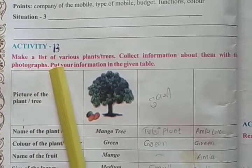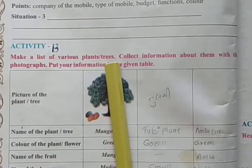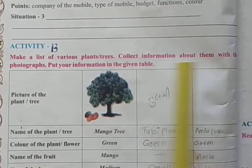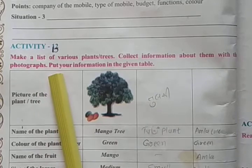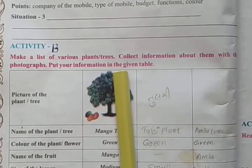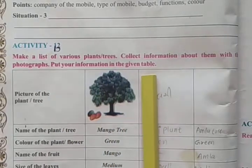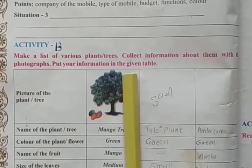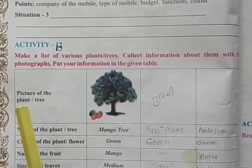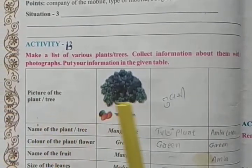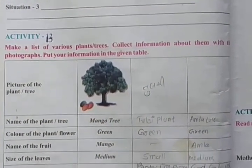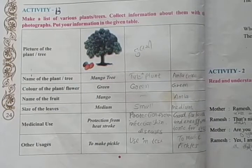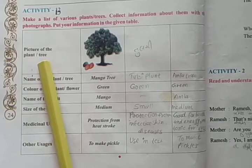Make a list of various plants and trees. Collect information about them with photographs. Put your information in the given table. For example, include a picture of the plant or tree.